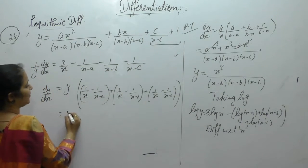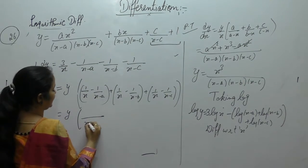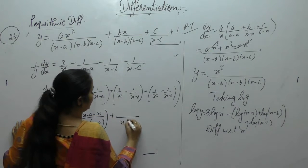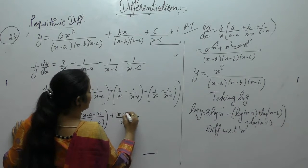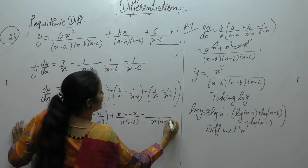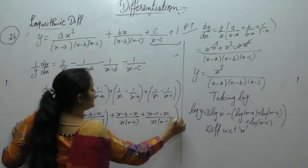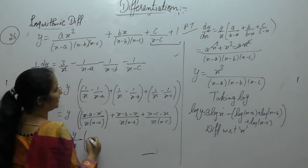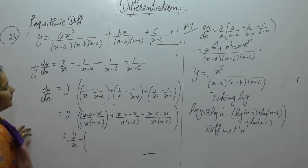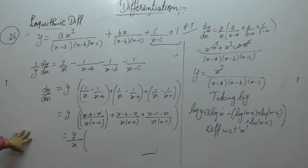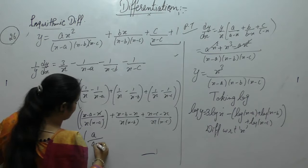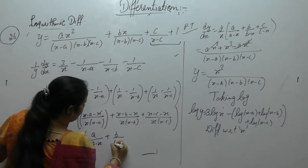Take the LCM: x(x-a), so we get (x-a - x). Similarly x(x-b) gives (x-b - x), and x(x-c) gives (x-c - x). Taking x common from the denominator, we are left with -a/(x(x-a)). Taking negative common, we get a/(a-x) + b/(b-x) + c/(c-x). So dy/dx = y·[a/(a-x) + b/(b-x) + c/(c-x)].